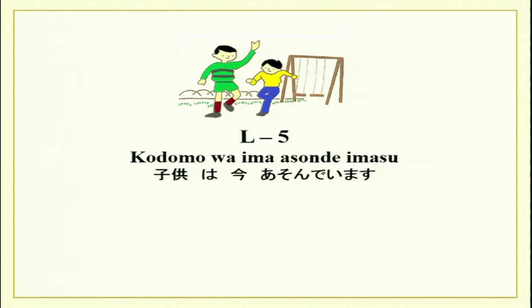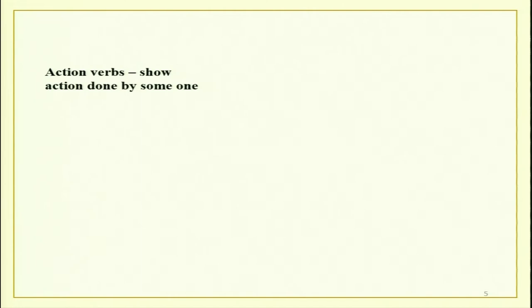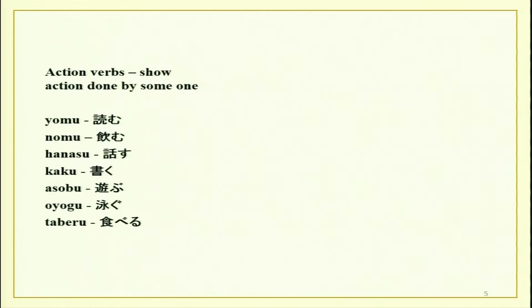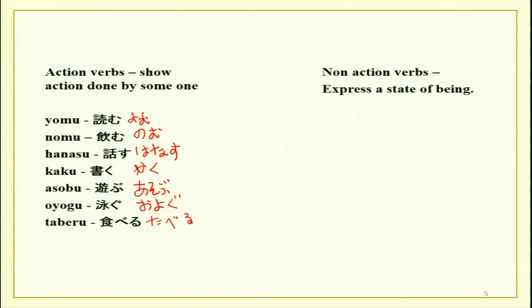There are two types of verbs: action verbs and non-action verbs. Action verbs show action done by someone or by the subject. Examples include yomu, nomu, hanasu — I am writing these specially so you can also practice your hiragana — kaku, asobu, oyogu, and taberu.